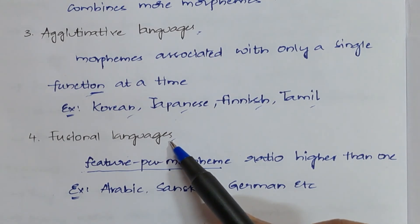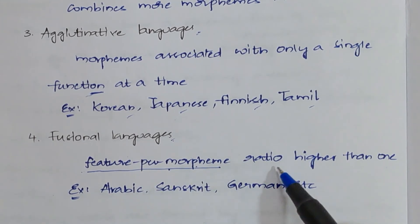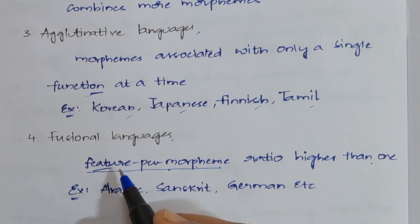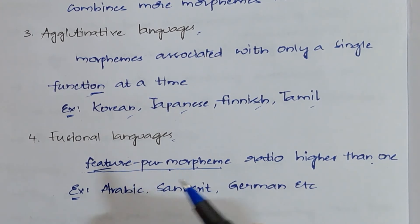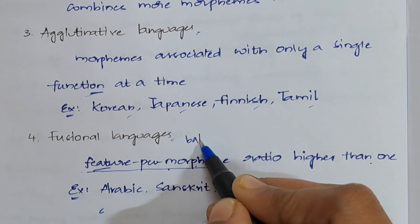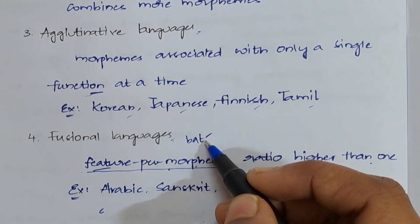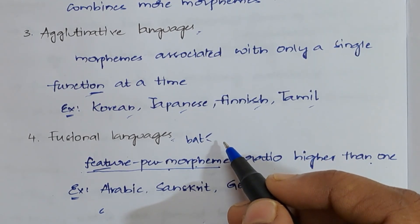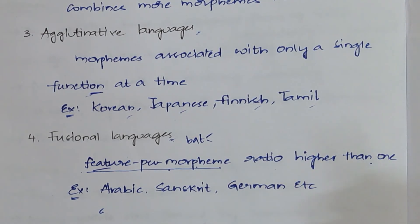Fusional languages have a higher-than-one feature-per-morpheme ratio, meaning one word can carry different meanings. For example, in English the word 'bat' has two meanings: a bat as an animal and a cricket bat. Languages like Arabic, Sanskrit, and German fall into this category. Thank you — if you like my content, please subscribe to my channel.